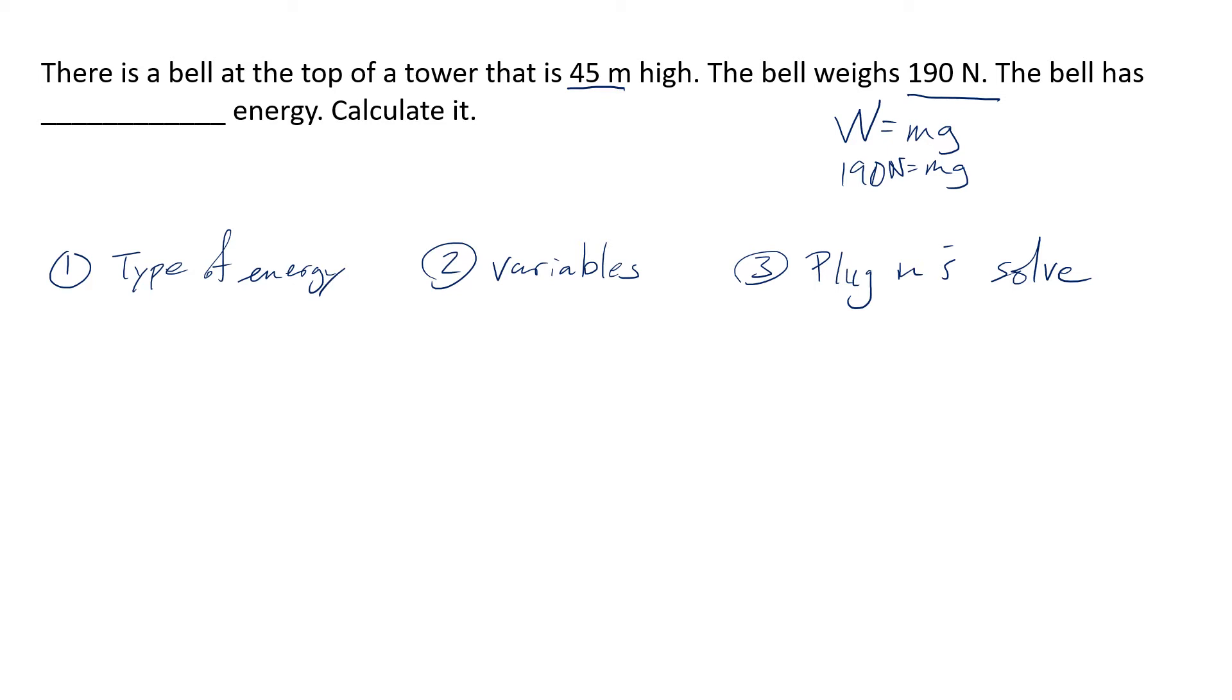So let's start with the type of energy. Well it's talking about a bell that's on top of a tower. It's not moving. If it's not moving then we know it's gonna be potential energy. Alright so I'm just gonna write potential here because that's what that blank space is there. And I know that PE potential energy is equal to MGH.